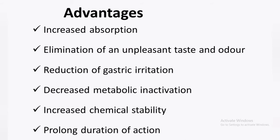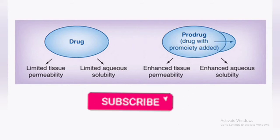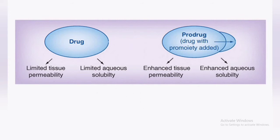Now we will learn why Pro-drugs are developed, and we will describe each advantage in detail. By modifying several physicochemical properties, Pro-drugs are made readily absorbable in our body. As shown in the picture, some chemicals have limited tissue permeability, which can be enhanced by converting them to the Pro-drug.